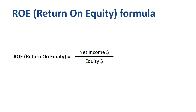ROE is an important indicator of the attractiveness of a business to shareholders. Can the company generate a good return on the equity that investors have invested in it? If you want to improve the ROE performance of the company, mathematically speaking you can either work on increasing the numerator of profitability, or reducing the amount in the denominator of equity.